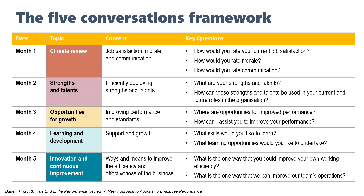Month three covers opportunities for growth — improving performance standards. Month four is learning and development: if you've had conversations on strengths and growth, you'll unearth learning opportunities, which aren't necessarily about sending people to courses — it may be coaching them or explaining how things are done. The final conversation is innovation and continuous improvement: how can we make things more efficient and effective in our team? That's a great framework I'd commend to you. If you've got any questions, type them in — I've thrown a lot at you in the first half hour.